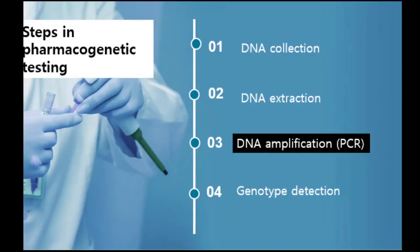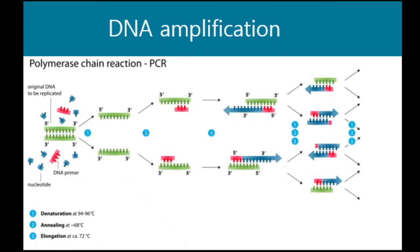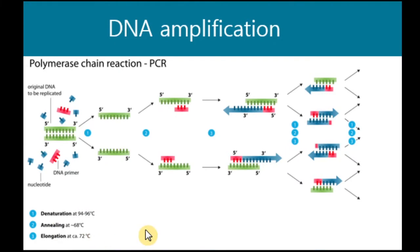The next step is DNA amplification using polymerase chain reaction, or PCR. The amount of extracted DNA is usually low, so it needs to be multiplied before we can use it for genotyping. PCR has its own standard procedure with controlled temperature cycles and PCR reagents. There are three steps in the PCR process: denaturation at a certain temperature, annealing, and elongation.